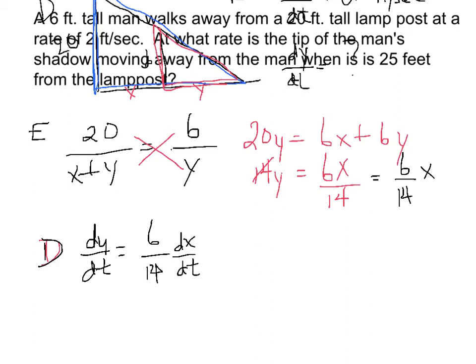And I know that dx/dt was equal to 2. So dy/dt is equal to 6/14 multiplied by 2, which is 12/14, which dividing both by 2 is 6/7 feet per second.